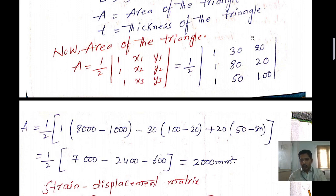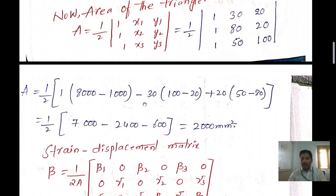Expanding the determinant with alternating positive and negative signs: for the first element, eliminating the first row and first column gives 80 times 100 minus 50 times 20, which is 8000 minus 1000. For the second, eliminating the first row and second column gives 1 times 100 minus 1 times 20. For the third, 1 times 50 minus 1 times 80. After multiplying out, you get the area A equal to 2000 mm square.